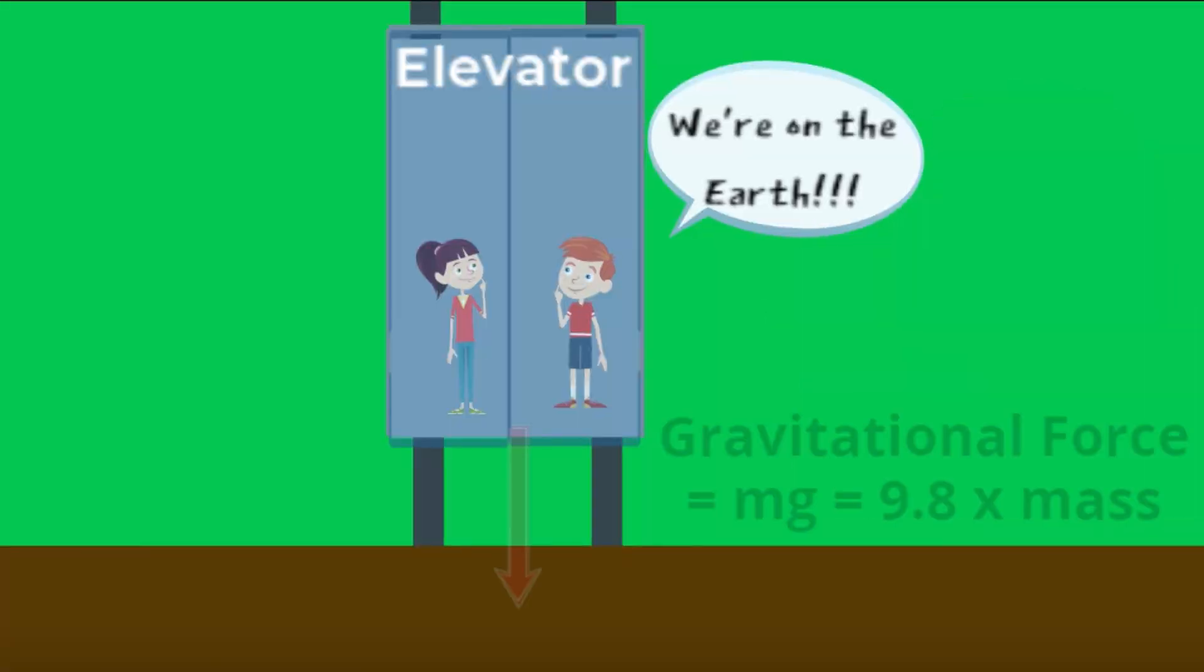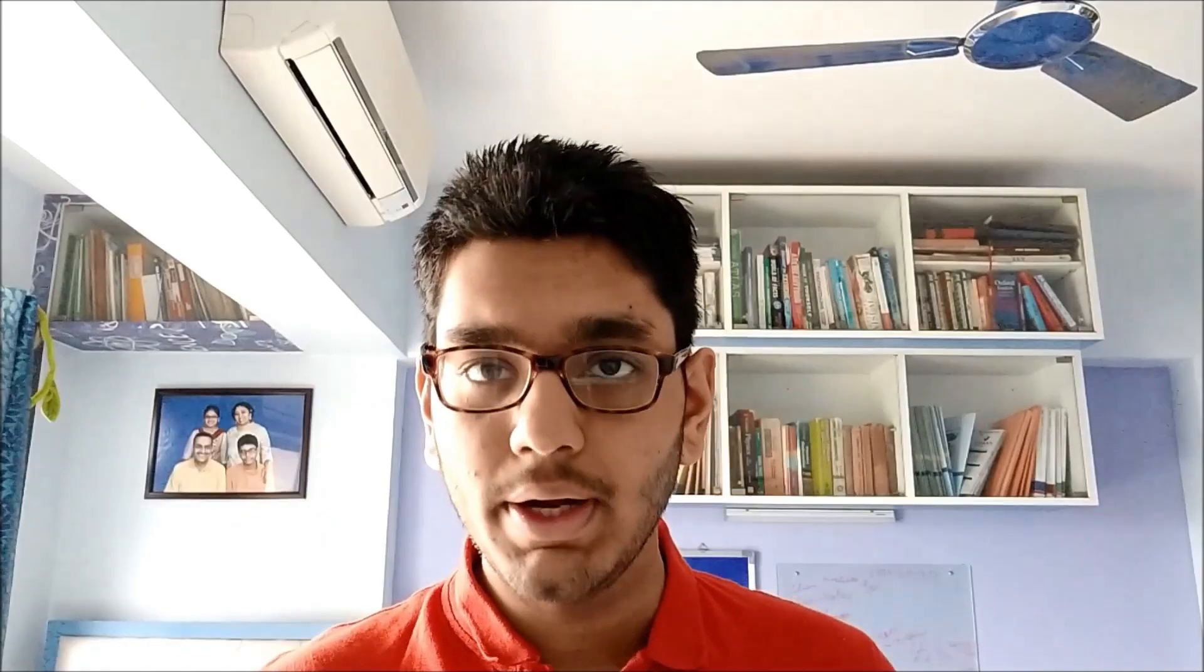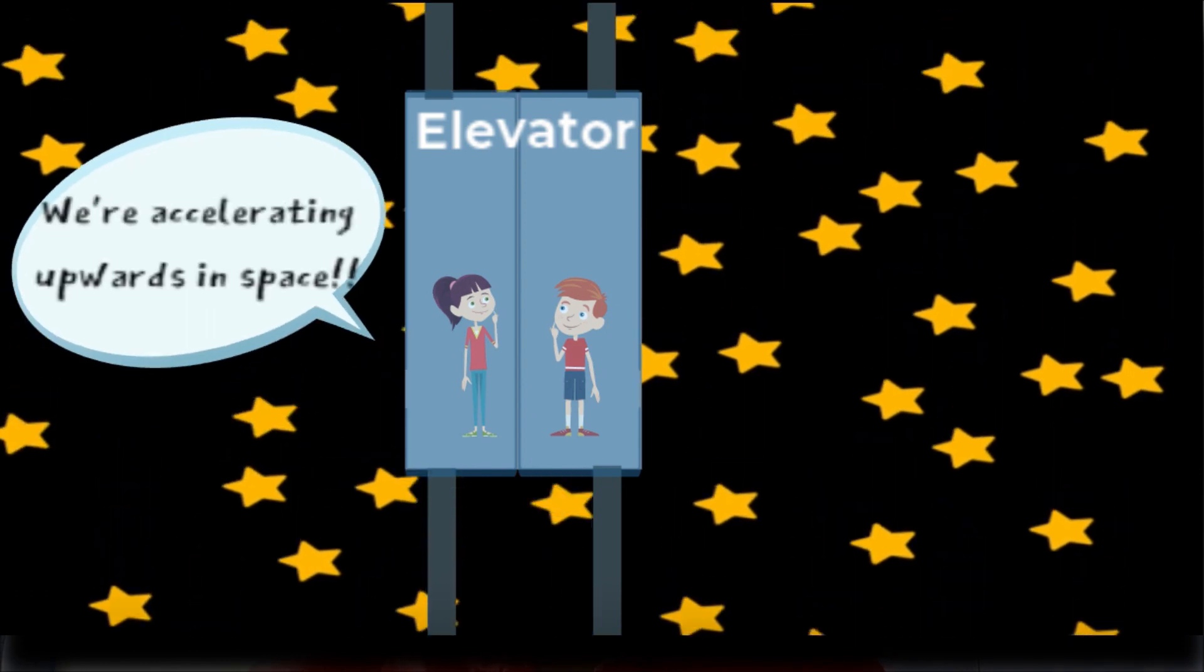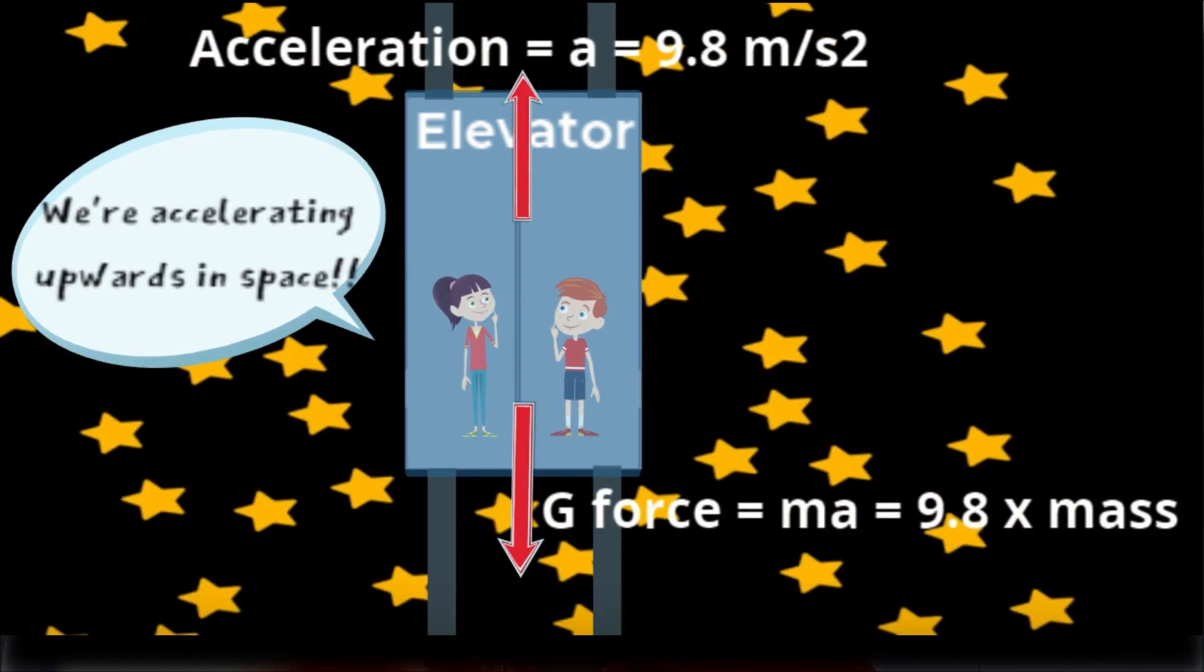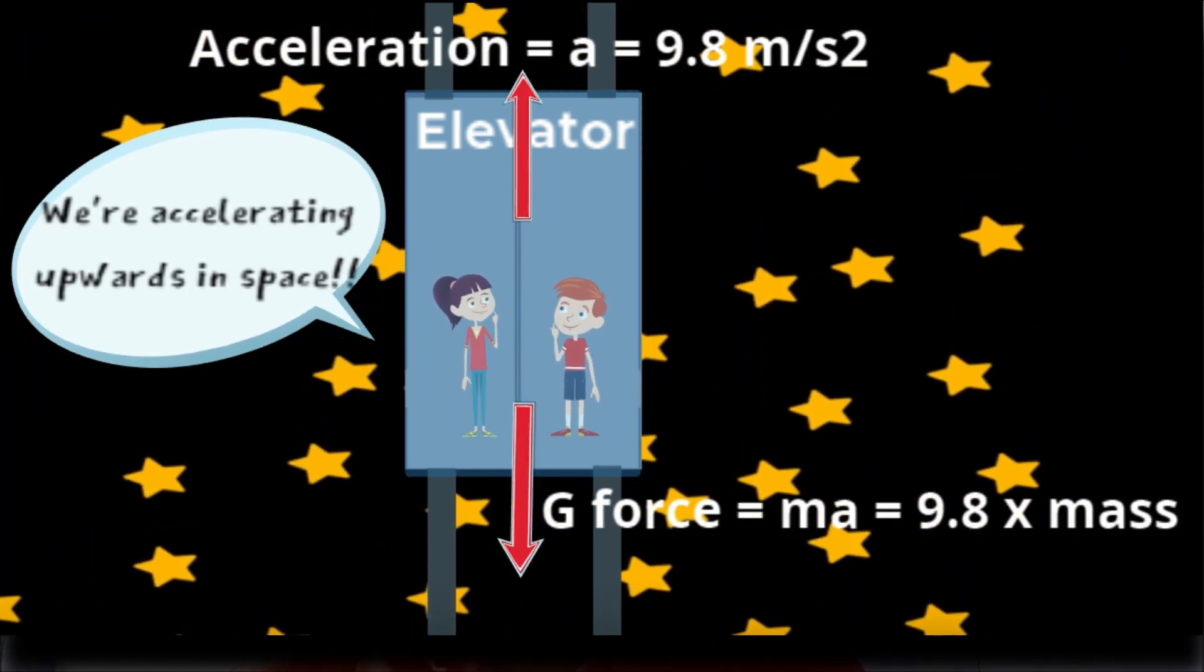This was the idea behind Einstein's famous thought experiment in the 1900s, where he showed that standing on Earth in a uniform gravitational field and accelerating upwards at 9.8 m per second squared through space would feel exactly the same.